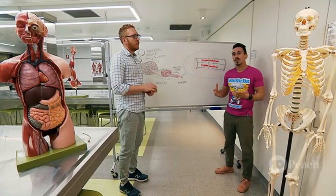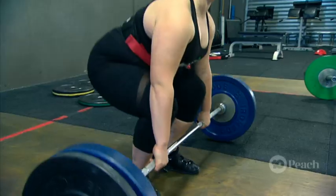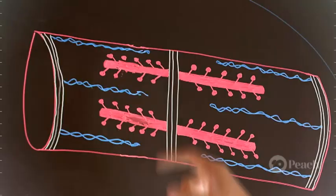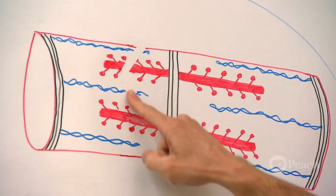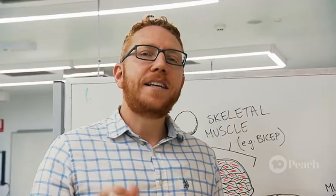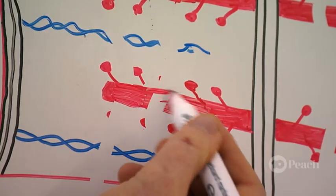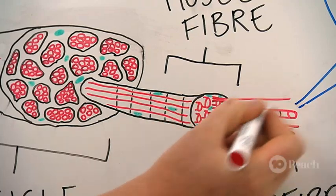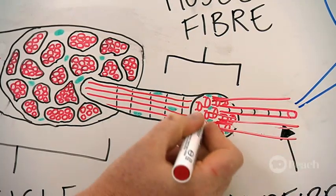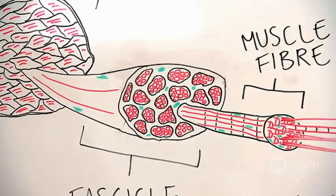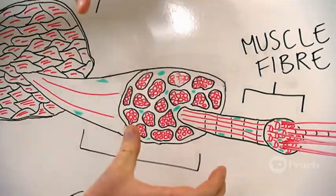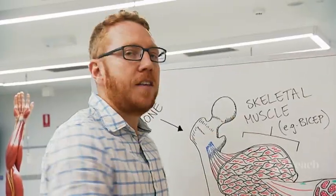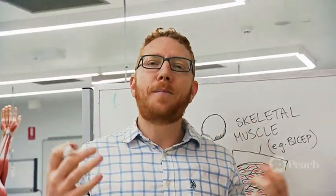When your skeletal muscle is under stress, like lifting weights in the gym, this can form micro tears in your myofibrils. Your body adapts to this stress by repairing these tears, which increases the number of myofibrils per muscle fiber, which increases the size of the fascicle, which increases the size of the muscle. This is known as hypertrophy.